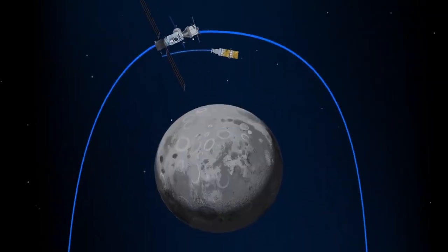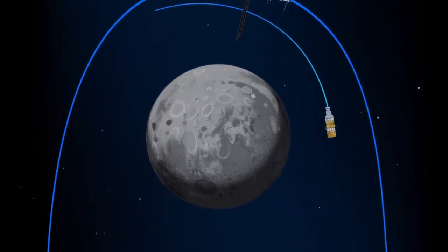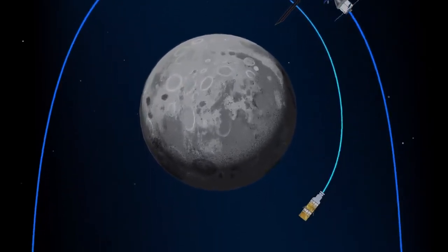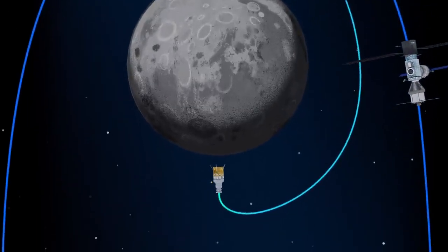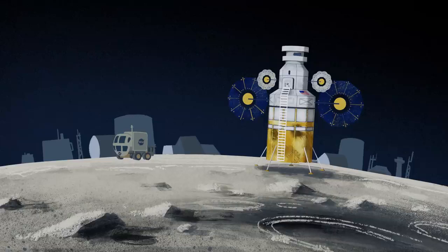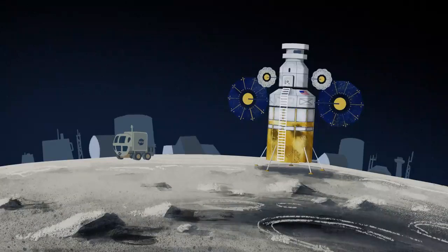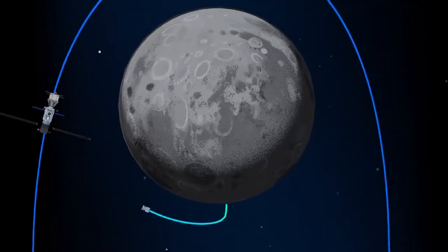The lunar lander system itself is built for three unique steps: descending from the halo orbit of Gateway down to a low lunar orbit, descending from low lunar orbit to the surface, and once the lunar mission is complete, launching from the surface of the Moon and ascending all the way back to the orbiting Gateway.